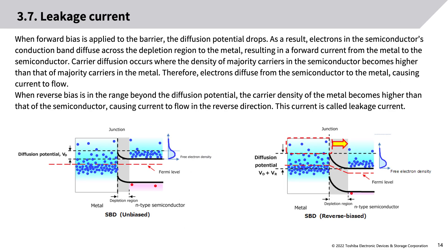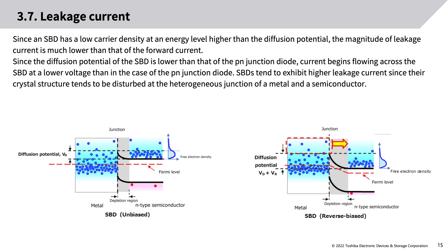Regarding leakage current: when forward bias is applied to the barrier, the diffusion potential drops. As a result, electrons in the semiconductor's conduction band diffuse across the depletion region to the metal, resulting in forward current from metal to semiconductor. Carrier diffusion occurs where the density of majority carriers in the semiconductor becomes higher than in the metal. When reverse bias exceeds the diffusion potential, the carrier density of the metal becomes higher, causing current to flow in reverse — this is called leakage current.